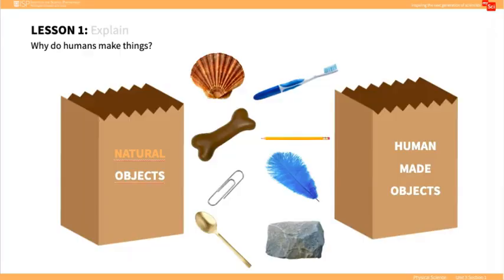Have students use their group's item to complete the What Is It sheet, shown here on Student Page 2. In the Explain portion of the lesson, have each group share its object with the class. Members could say why they think it is a natural object or made by humans. Ask the group with human-made objects — including the plastic spoon, paper clip, pencil, and toothbrush — to identify what those objects are used for.